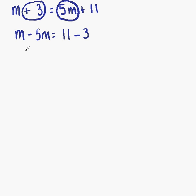Now we can simplify each side. m minus 5m is minus 4m. That equals 11 minus 3. 11 minus 3 is 8. So now we have minus 4m equals 8.